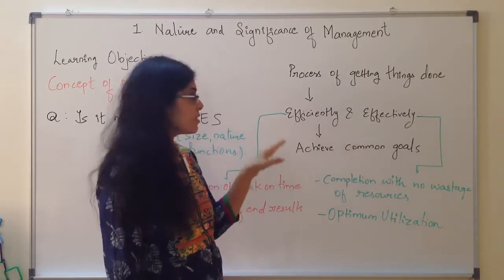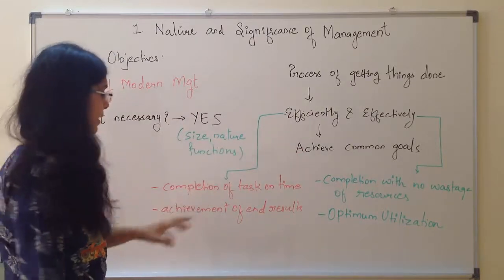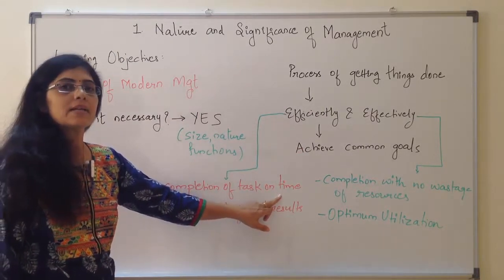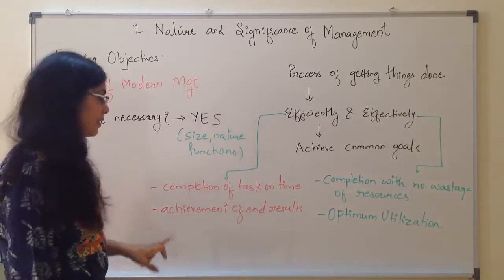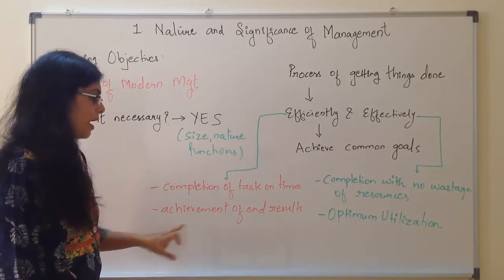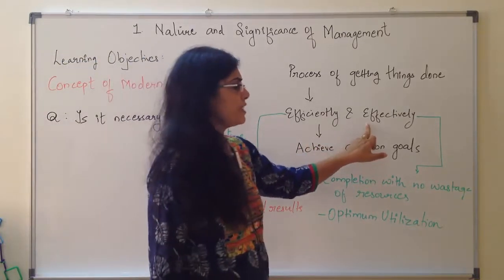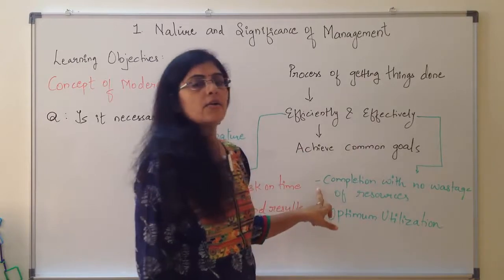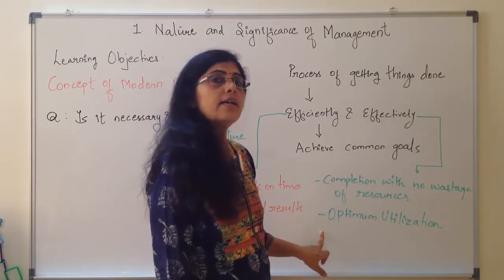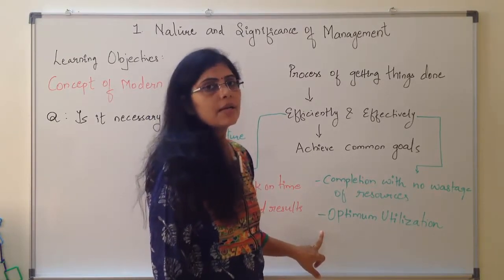There is a difference between efficiency and effectiveness. Efficiently means completion of the task on time — you are completing the task within a given standard time, achieving the end results. Effectively means completing the task with no wastage of resources, or optimum utilization of resources with minimum cost.